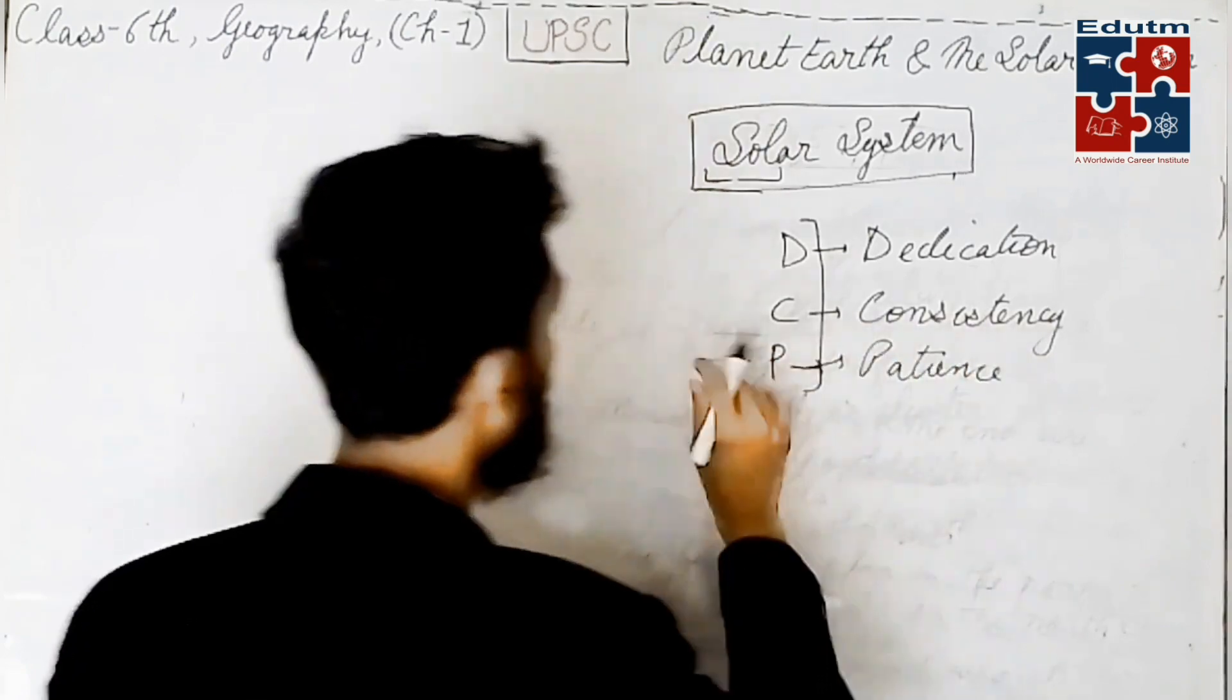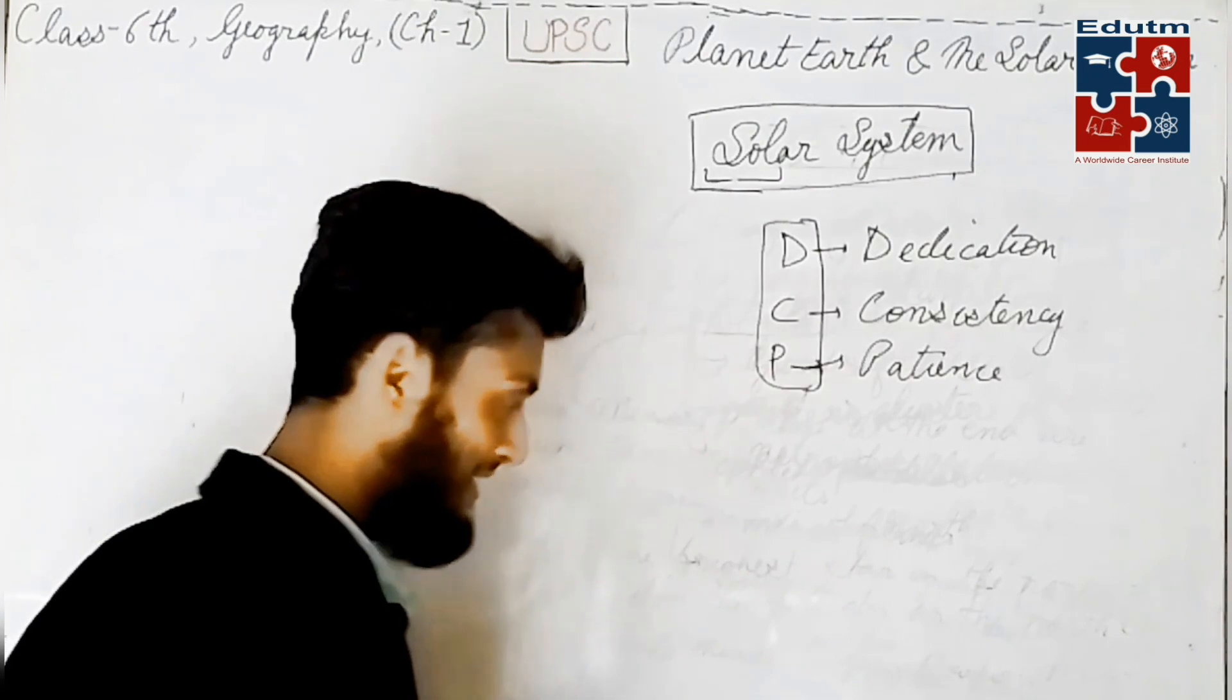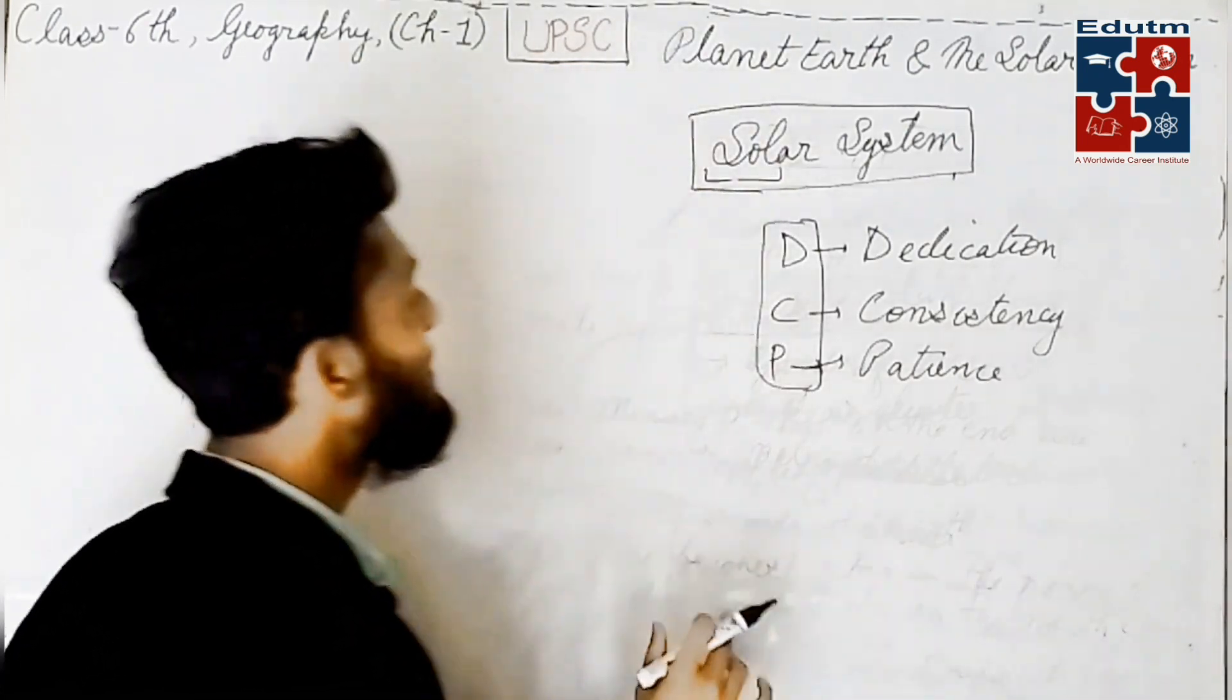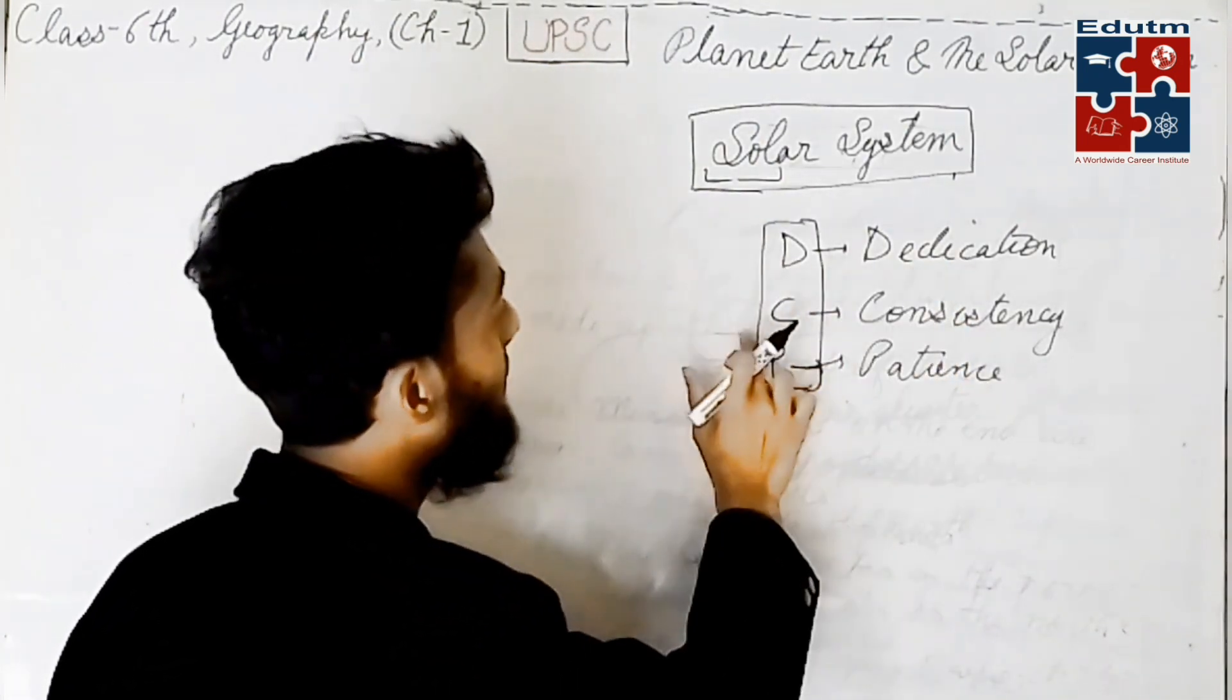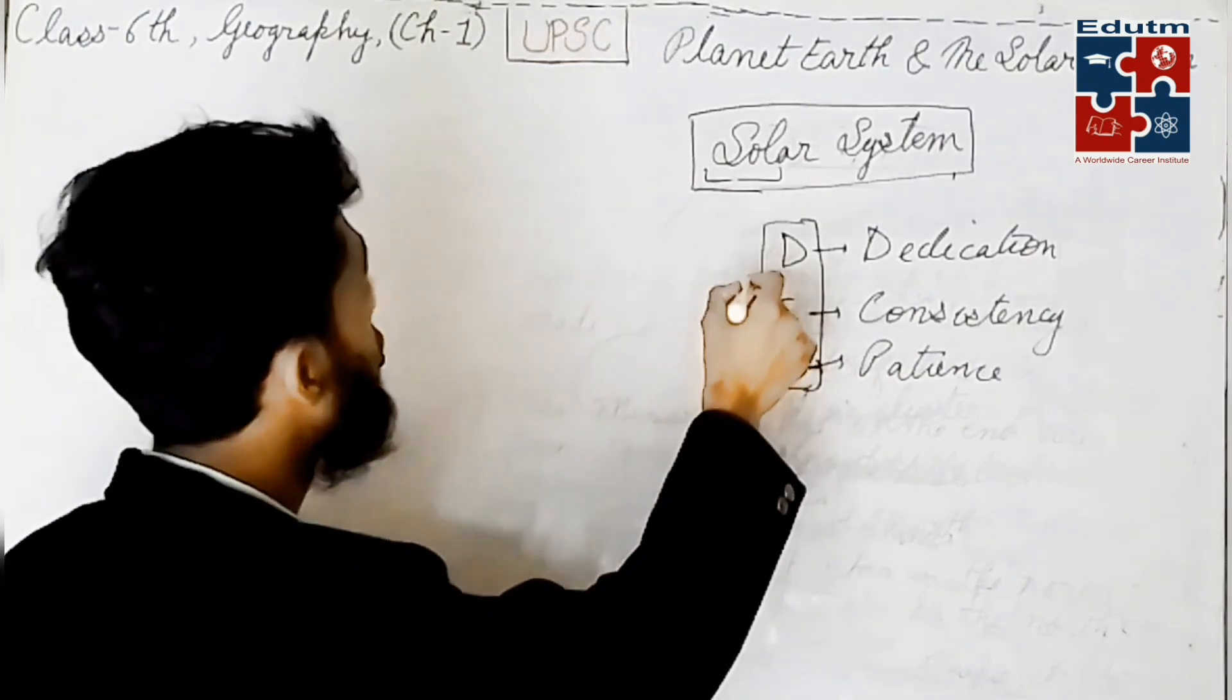I have told you the formula of DCP. It is the golden formula I have made. You can say thanks to me if you want. So DCP means dedication, consistency and patience. It is the only formula to prepare for UPSC.